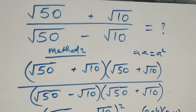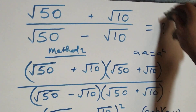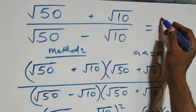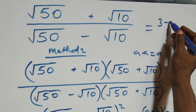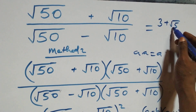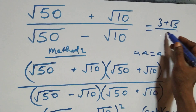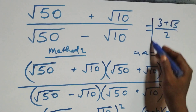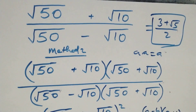We can conclude that this square root problem simplifies to (3 + √5) / 2. Thank you for watching — don't forget to subscribe for more videos, give a thumbs up, leave a comment, and see you in the next class. Bye for now!